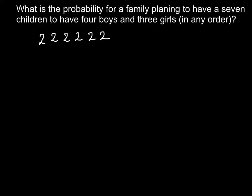For seven children we just have to repeat this probability seven times. To find how many combinations exist, we multiply these probabilities for independent events, which is the same as two raised to the power of seven. The answer is 128, so 128 different variants exist.